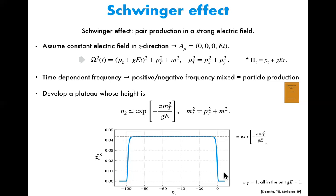The width of this plateau is proportional to the duration of time during which the electric field is imposed. In this specific case, the electric field was imposed from zero to 100, so there exists a plateau from minus 100 to zero. An important point is that the height of this plateau is well approximated by a formula: the occupation number is exponentially suppressed both by the mass of the fermion and also the transverse momentum P_T for non-zero P_T modes.